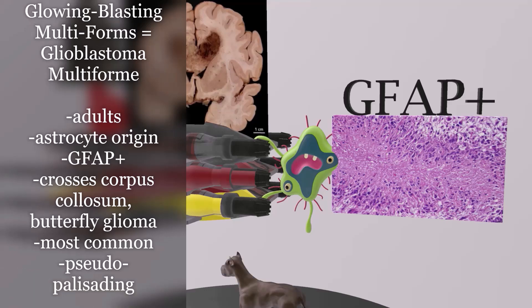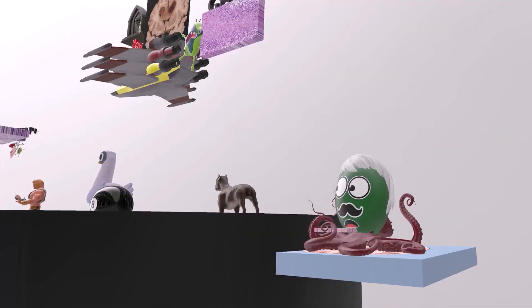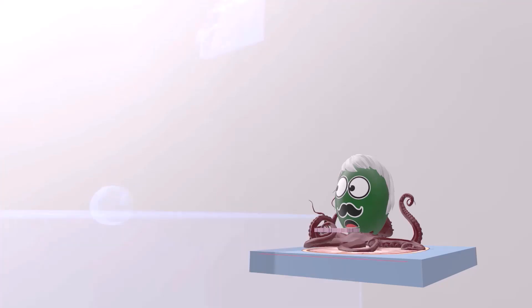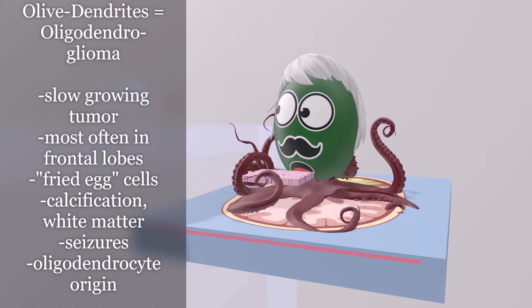Let's move on to the next adult primary brain tumor. This character here is kind of off the dance floor — he didn't make it on because he's very slow. This guy is an olive with dendrites, those dendritic projections representing oligodendroglioma — another adult primary brain tumor. As mentioned, he is very slow since oligodendroglioma is a slow-growing tumor.